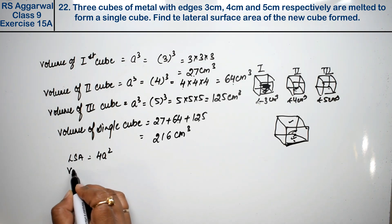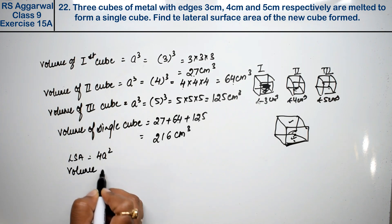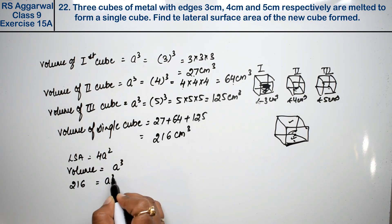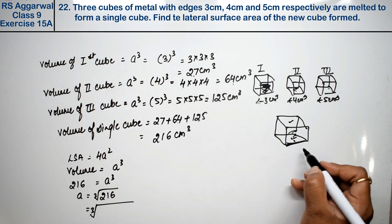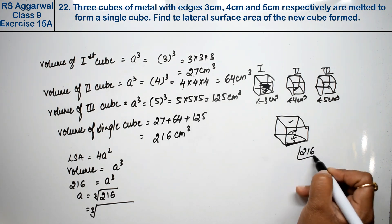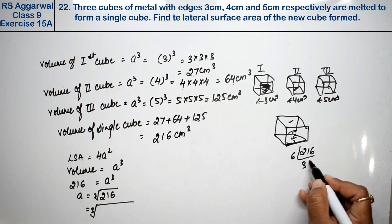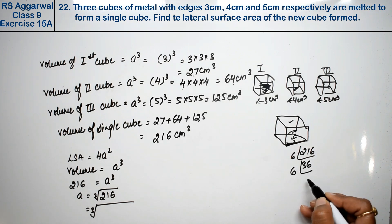Volume's formula is a cube, and this is 216. So what is the value of a? The cube root. We factor 216: 2, 1, 6... 6 into 6 into 6. So a equals 6 cm.